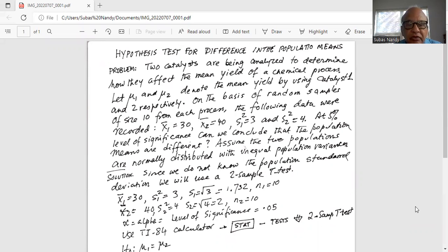X1 bar is 30, X2 bar is 40, S1 square is 3 and S2 square equal to 4. Here X1 bar is the mean of sample 1, X2 bar is the mean of sample 2, S1 square is the variance of sample 1 and S2 square is variance of sample 2.